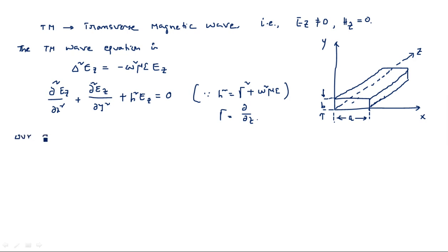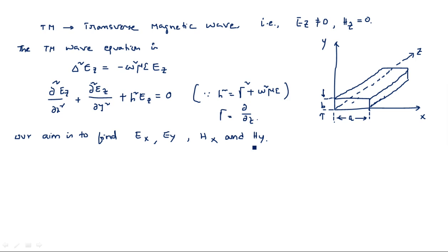Our aim is to find four parameters: Ex, Ey, Hx, and Hy. Whatever the derivation — whether propagation of waves, TE waves, or TM waves — our aim is always to find these four parameters. Because if any one of these components exists, we can say the wave exists. If all four together are zero, then the wave does not exist. That we have seen in the case of TEM.